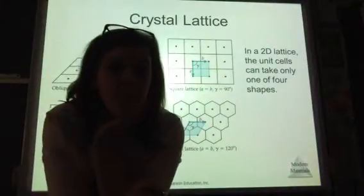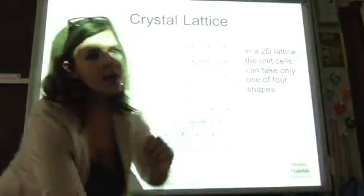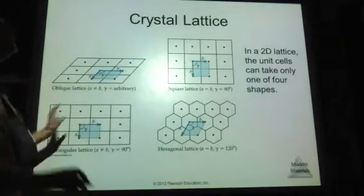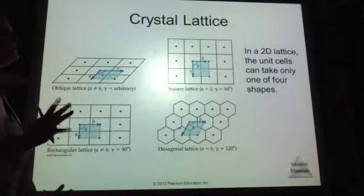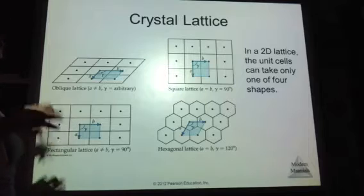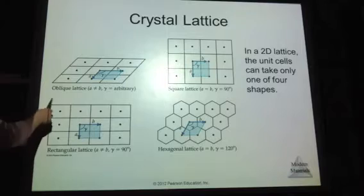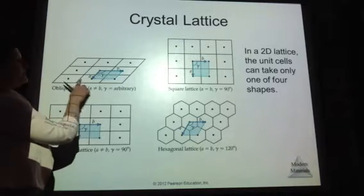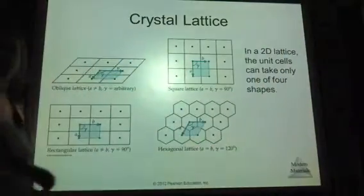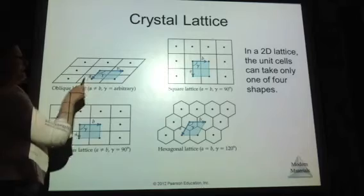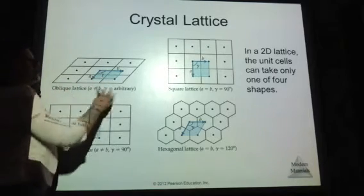We're going to continue with our talk about crystalline solids. The last thing we got to was the two-dimensional lattice. There are four different types that the unit cells can take in two dimensions. There's the oblique lattice, which means A and B are going to be different lengths, and gamma is just going to be that angle between A and B — just an arbitrary angle.